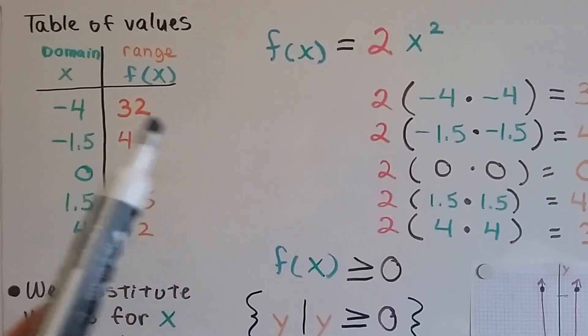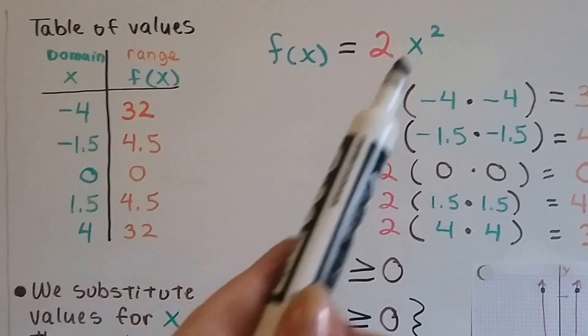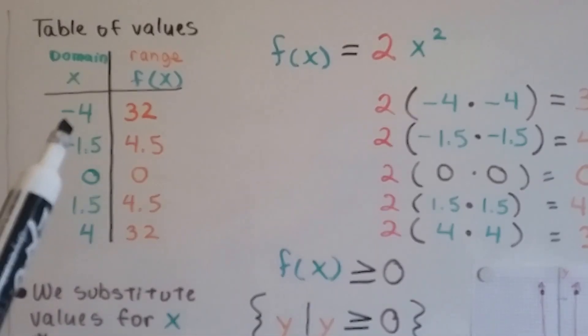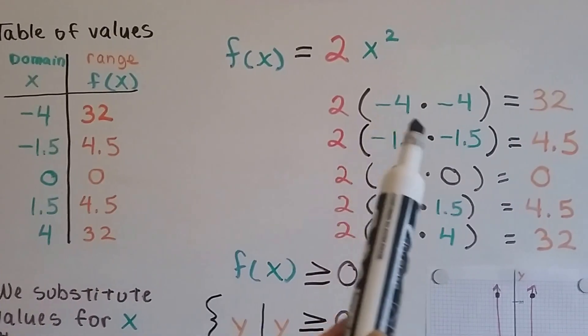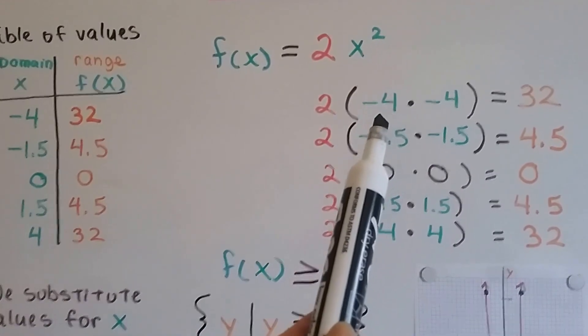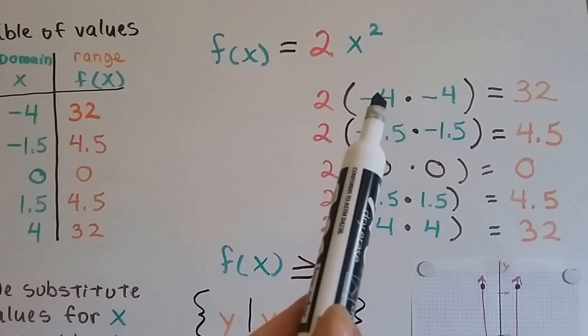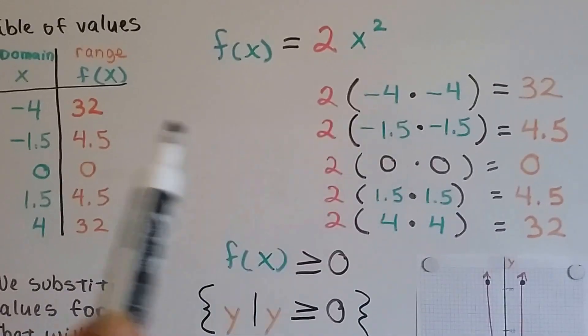So, if the function of x, if this x is a negative 4, then we're going to do negative 4 times negative 4 because that's x squared, isn't it? And that's going to give us a positive 16 times 2. That would be 32. See?